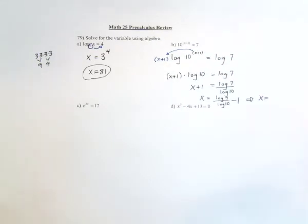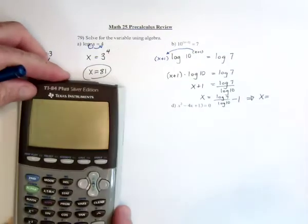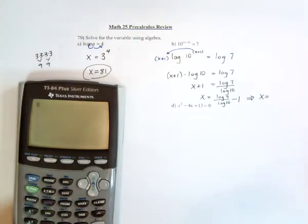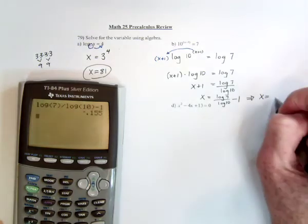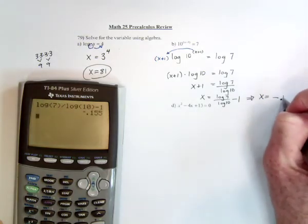And then to get the decimal approximation for that: log 7 divided by log 10, then subtract 1. Negative 0.155.